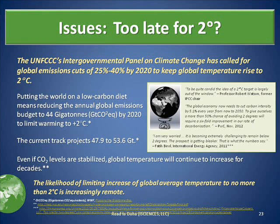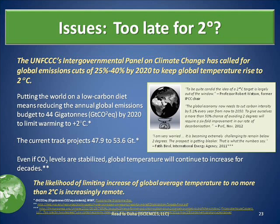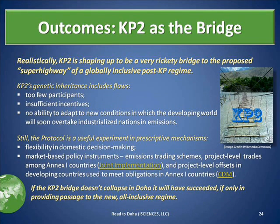The Intergovernmental Panel on Climate Change has called for global emissions cuts of 25% to 40% by 2020 to keep global temperature rise to 2 degrees. The likelihood of achieving this limit is increasingly remote. KP2 is shaping up to be a very rickety bridge to the proposed superhighway of a globally inclusive post-KP regime.